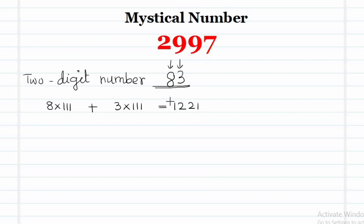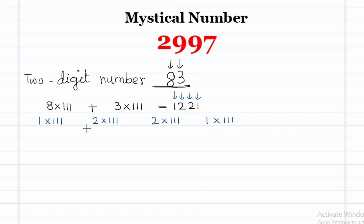What are the digits of 1221? They are 1, 2, 2, and 1. We multiply each of these digits by 111: 1 into 111, 2 into 111, 2 into 111, and 1 into 111, and add all four terms. This gives us 666.